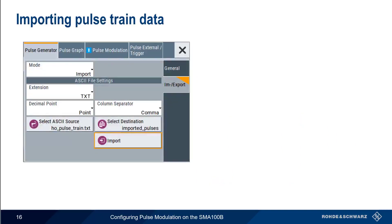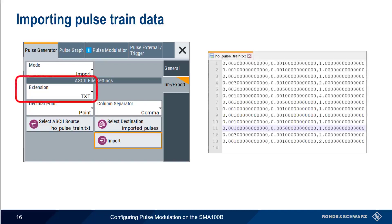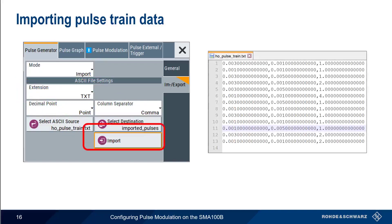Alternatively, we can create our Pulse Train using a text or CSV file and then import the file. The imported file needs to have the same three columns as before – Pulse Width, Pulse Interval, and Pulse Count.